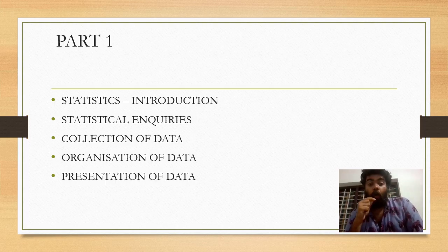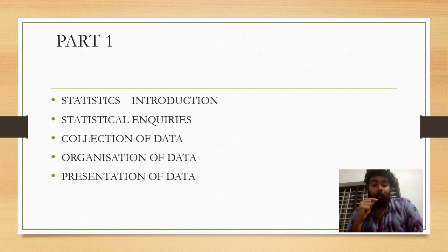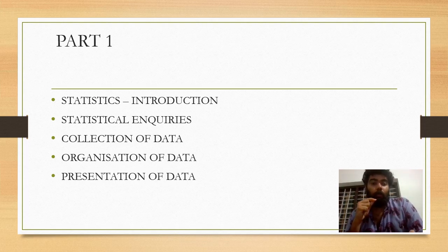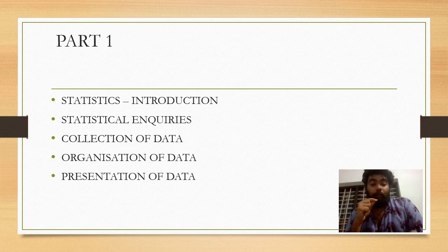Next is Organization of Data. Data that is collected is organized into a good manner. For example, 1, 2, 3, 4, 5 — or 4, 3, 2, 1. The organized manner is correct. Without organization, we are confused. That is the organization of data.